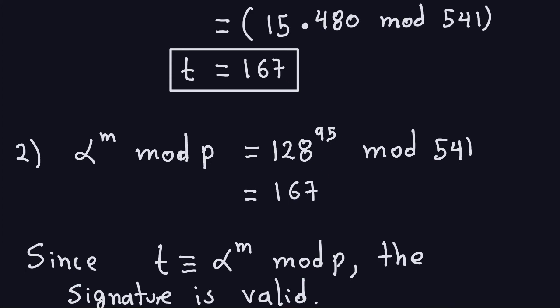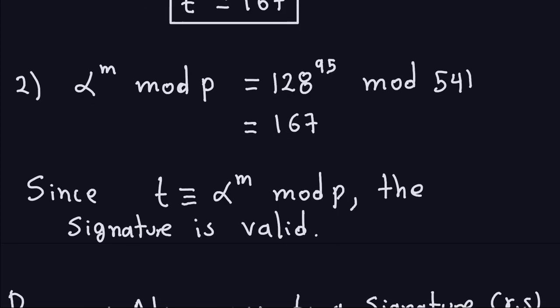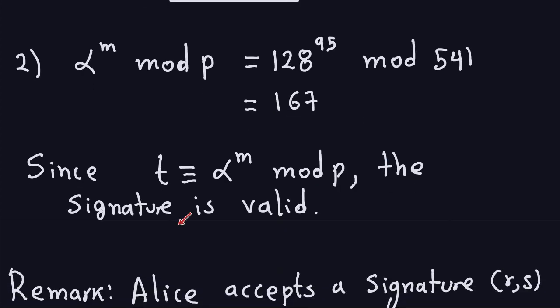Since Alice is doing this, then Alice says, okay, this number is equal to this, then this signature is valid, and the message was sent by Bob or anyone in possession of Bob's private key. So since this is the case, then the signature is valid.